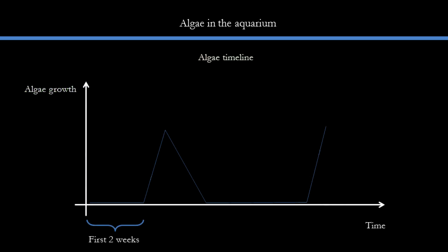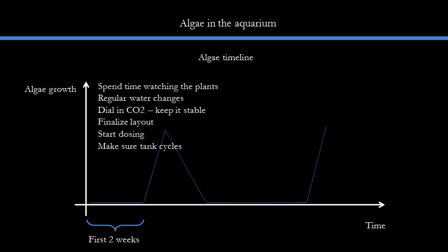For newly set-up tanks, the appearance of algae tends to follow a predictable timetable. For the first couple of weeks, regardless of your parameters, your tank will be quite clean. This doesn't mean we can sit back and relax — we should use this window to dial in our CO2 accurately, make sure our plants are going well. If you have a dosing regime, it should be started already. And regular water changes should be done to remove organic waste, ammonia, and any potential algae spores in the tank.